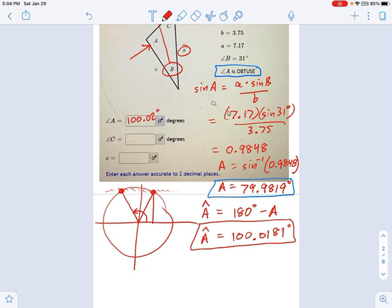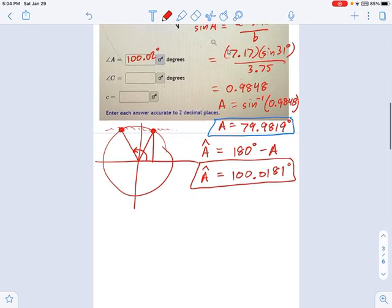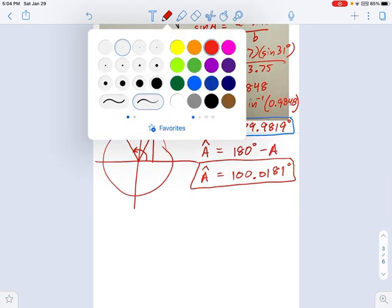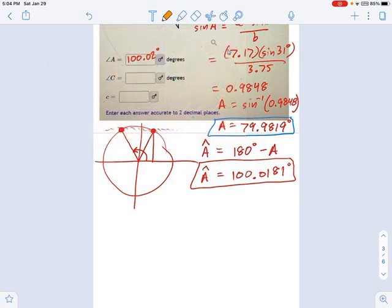100.02 degrees. Now you're moving on. I think the rest of the problem should be fairly straightforward, but I'll just give you some reminders of how to do this. How about angle C?